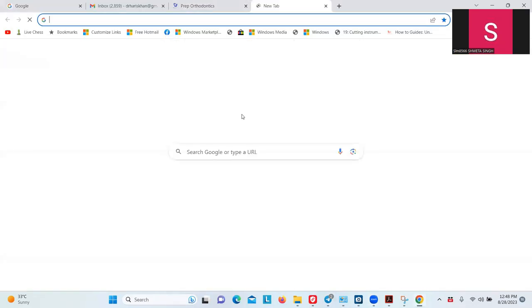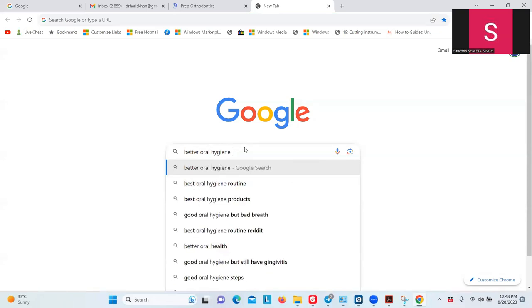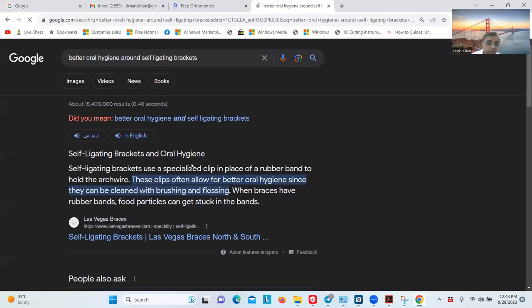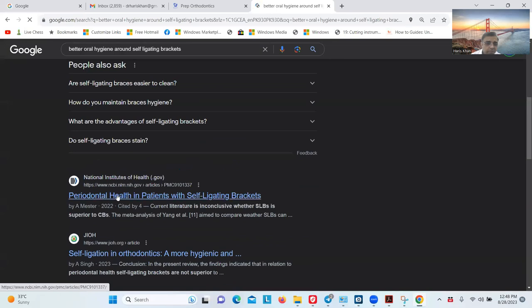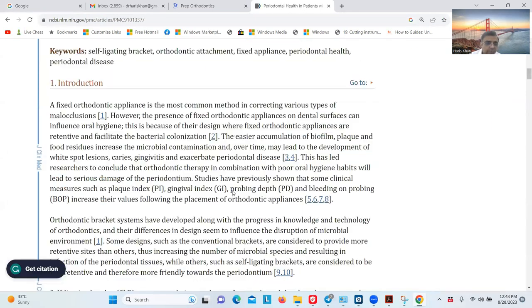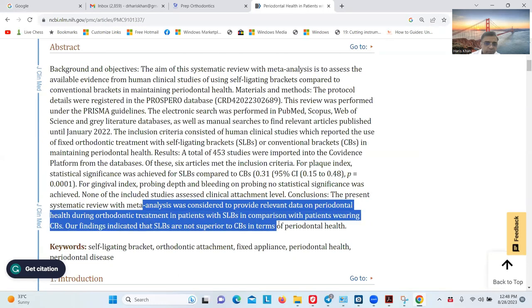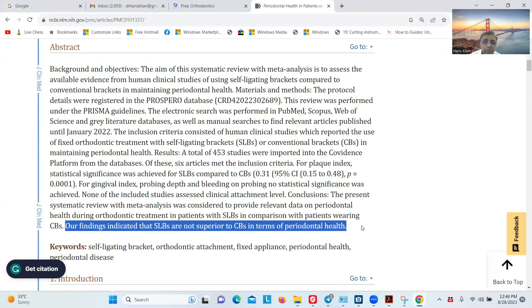One was quicker treatment time—there is no evidence for that. Root resorption has no evidence. Yes. Smile aesthetics is also not an option because it doesn't broaden the smile. And reduced pain—that is also, I think, not approved. Yes. Then there was improved oral hygiene due to reduced bacterial buildup around the brackets. So is oral hygiene better in self-ligating? Yes, I told you there is one randomized clinical trial. I told you there is no evidence that self-ligating is superior in terms of periodontal health.